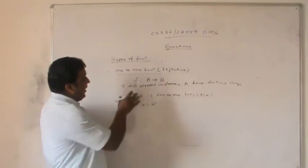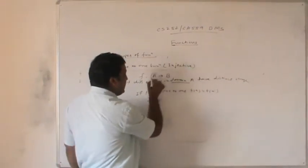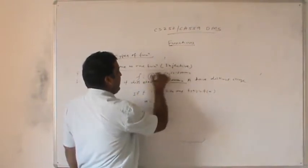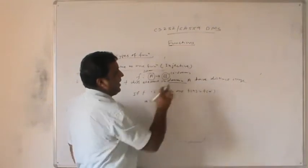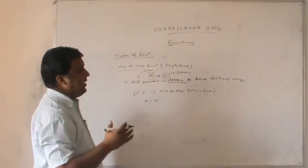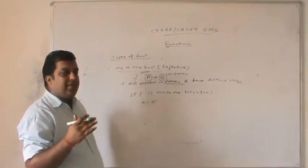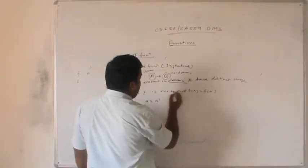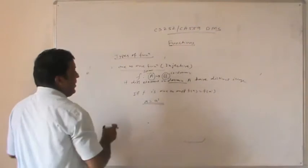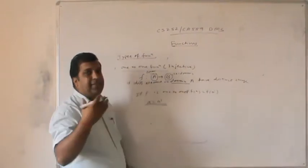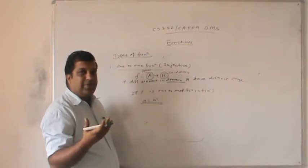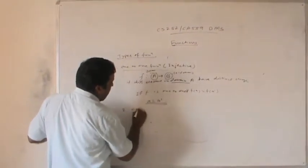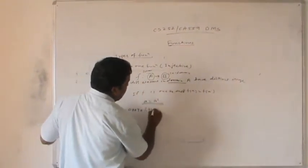If different elements in domain A have distinct images in B, then f is a one-to-one or injective function. The second type is the onto function, also called a surjective function. We say f: A → B is surjective if each element of B is the image of some element of A.